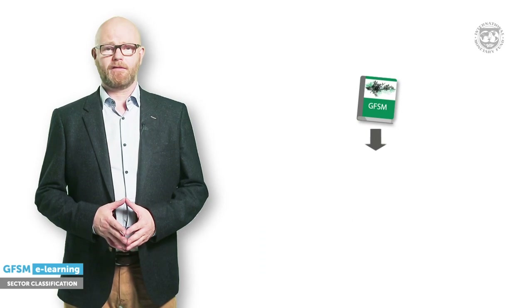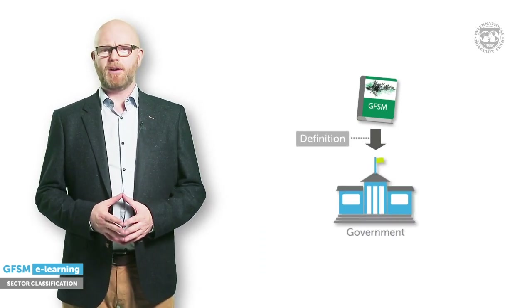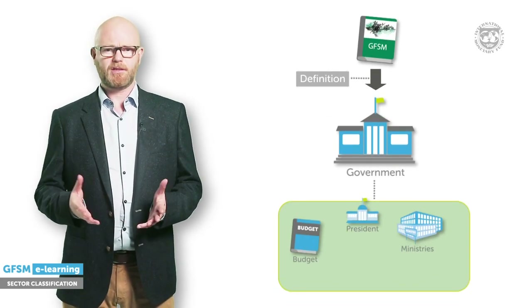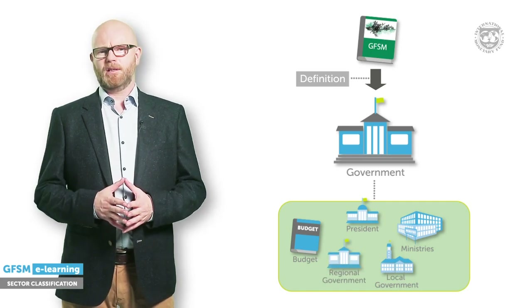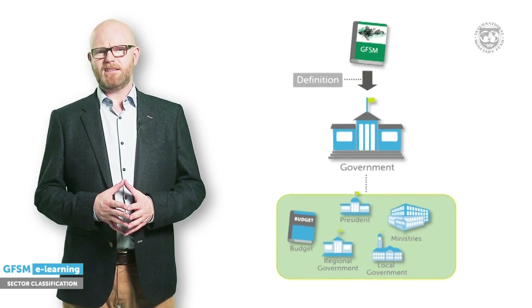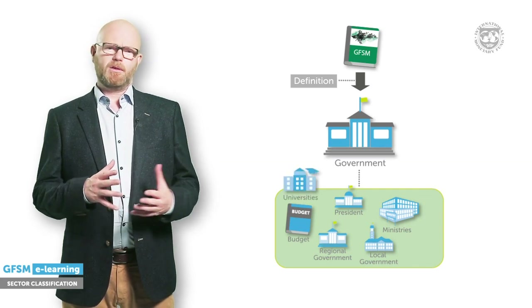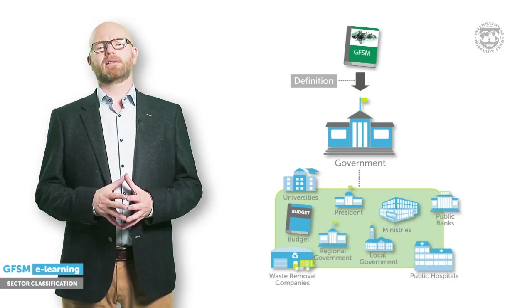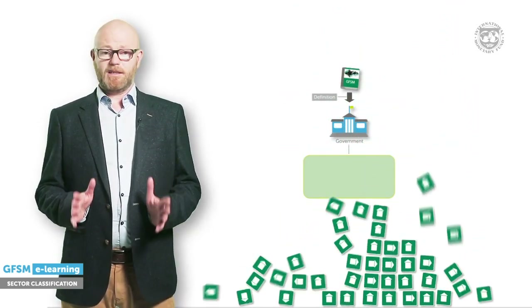How does GFSM define government? Which entities are covered? Identifying entities may seem self-evident. Obviously, the budget will qualify — the ministries and departments and the president's office — as will local and provincial governments. But what about other entities that exist at the boundaries of government? Just think of universities, public hospitals, or the local waste removal company. What about publicly owned banks? There can be tens of thousands of such entities within a single country. Clearly, defining the boundaries of a government is not always a straightforward exercise, yet the decision to include or exclude individual entities can have a significant impact on key fiscal measures, such as the deficit or surplus or the debt level.